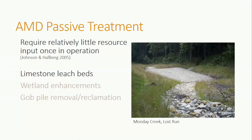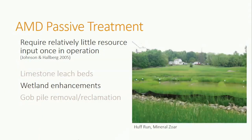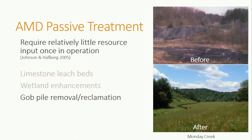Passive treatments require relatively little resource input once constructed compared to active treatments. Our first example is a limestone leach bed. Water is diverted to flow through channels made of limestone, and since limestone is alkaline, the acidic water is neutralized as it flows through. Another passive treatment is wetland enhancement. Researchers found that wetlands tend to neutralize and remove dissolved metals from the water. The phenomenon was originally found in naturally occurring wetlands, but wetlands are now constructed and enhanced by land managers. Gob pile removal and reclamation is another passive treatment. Gob piles are piles of waste rock from mining, which can also secrete AMD contaminants. By removing gob piles from nearby streams and restoring the land, the problem of AMD is largely reduced or completely eliminated.